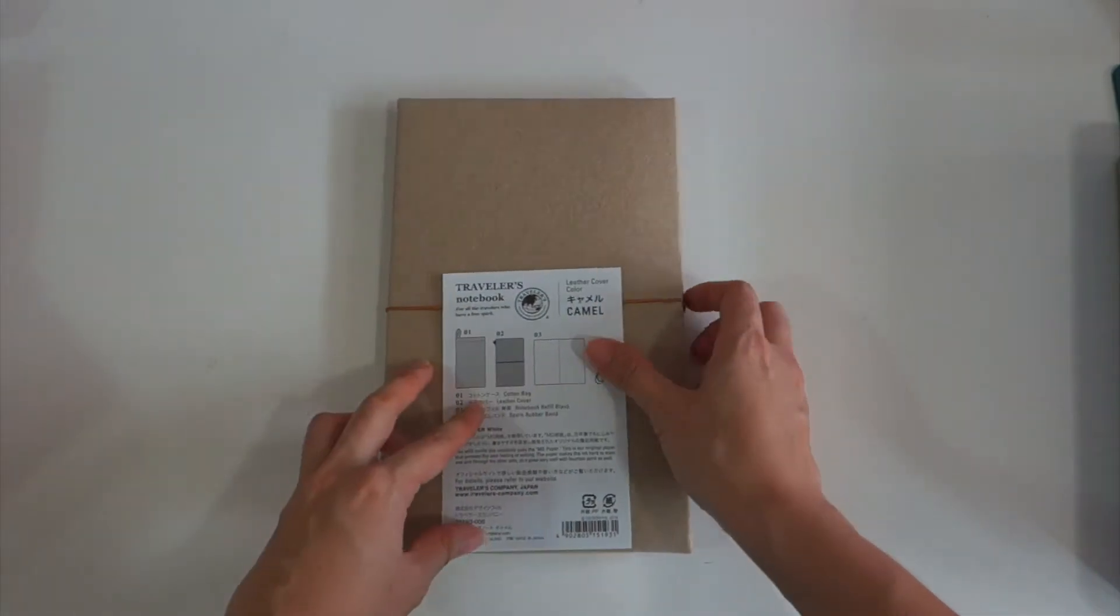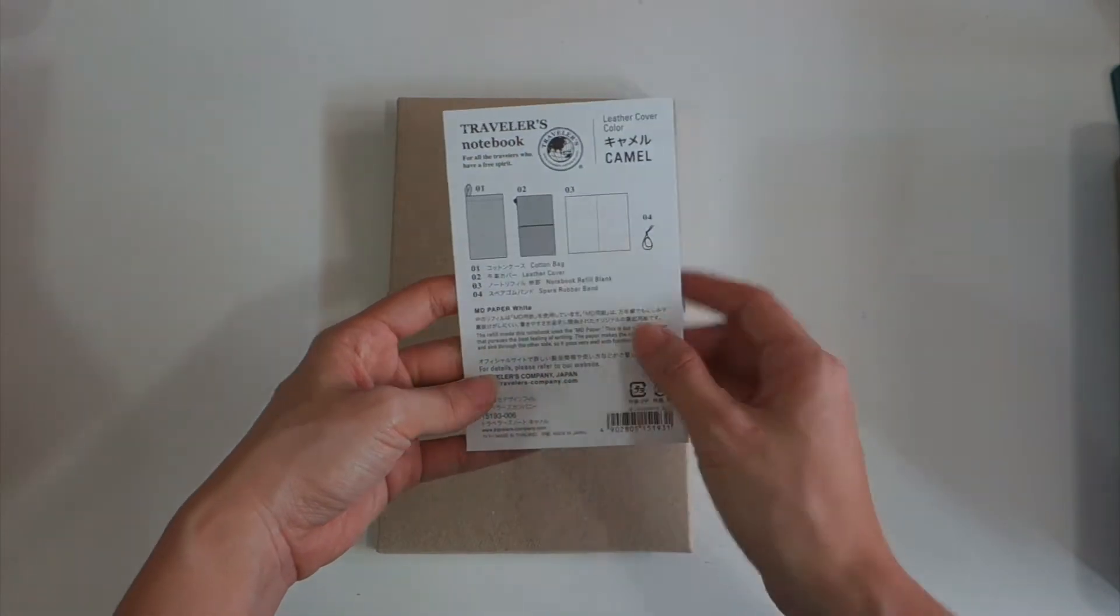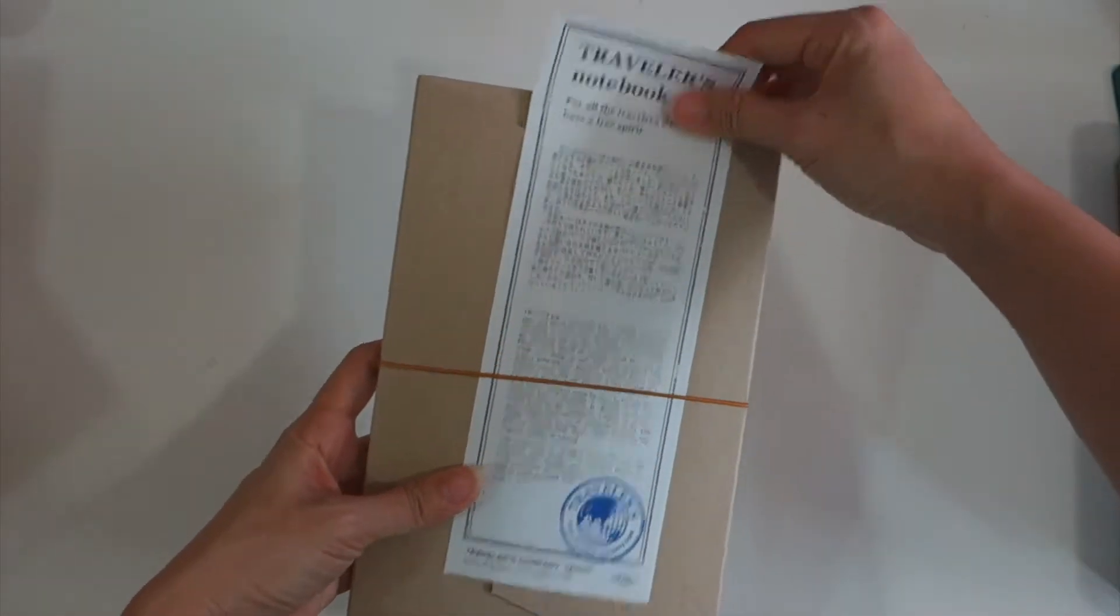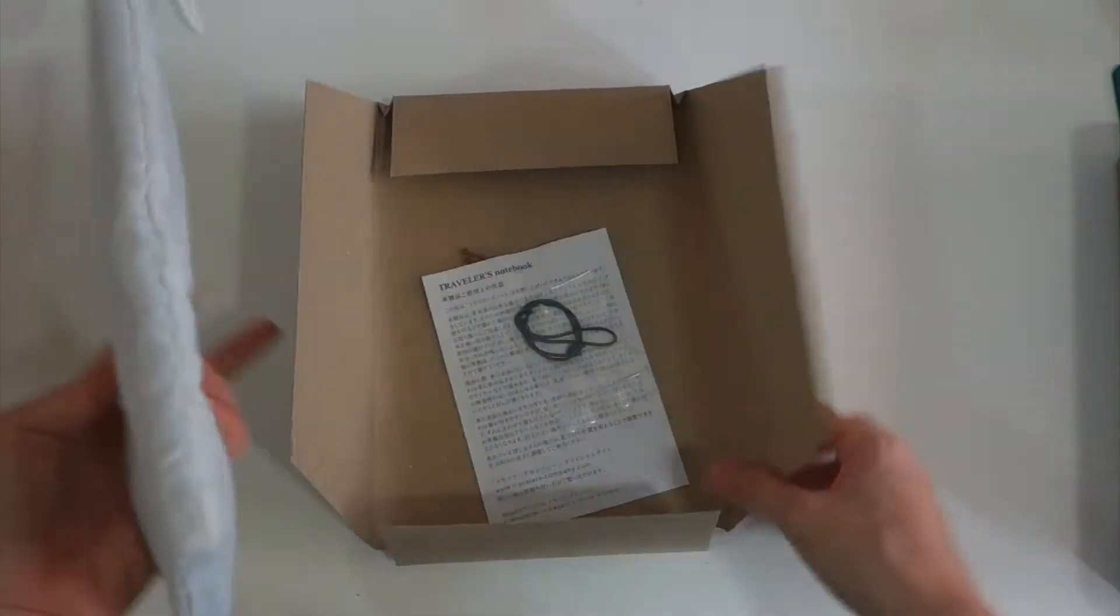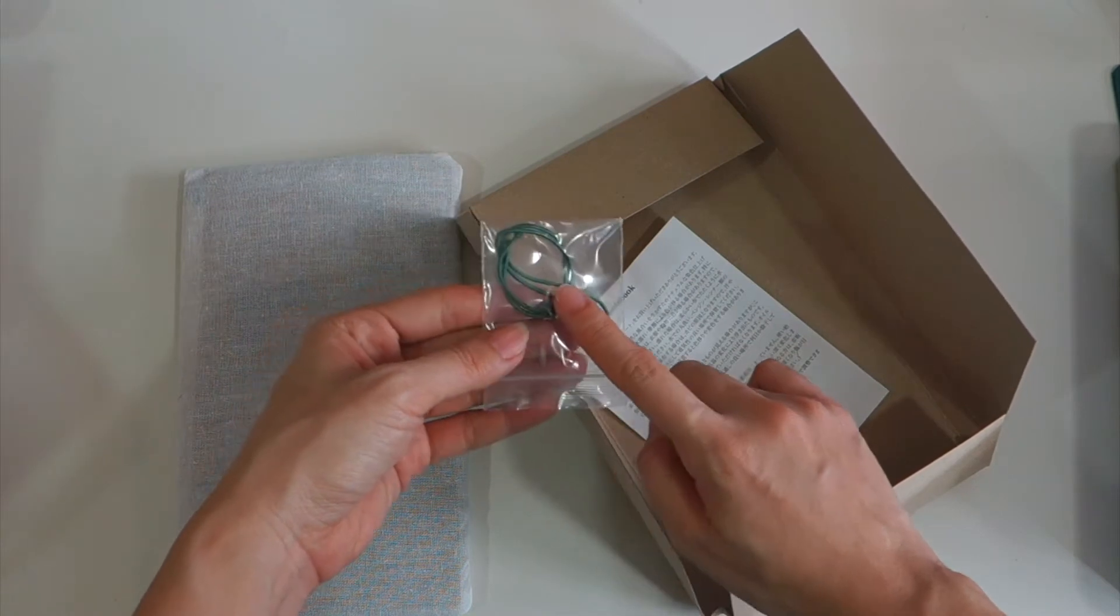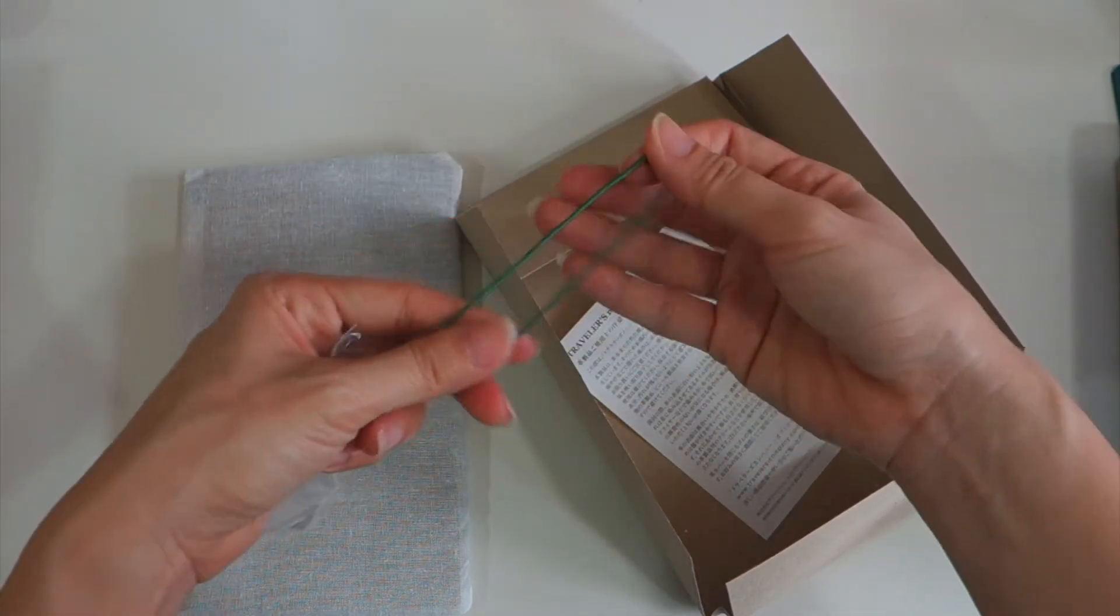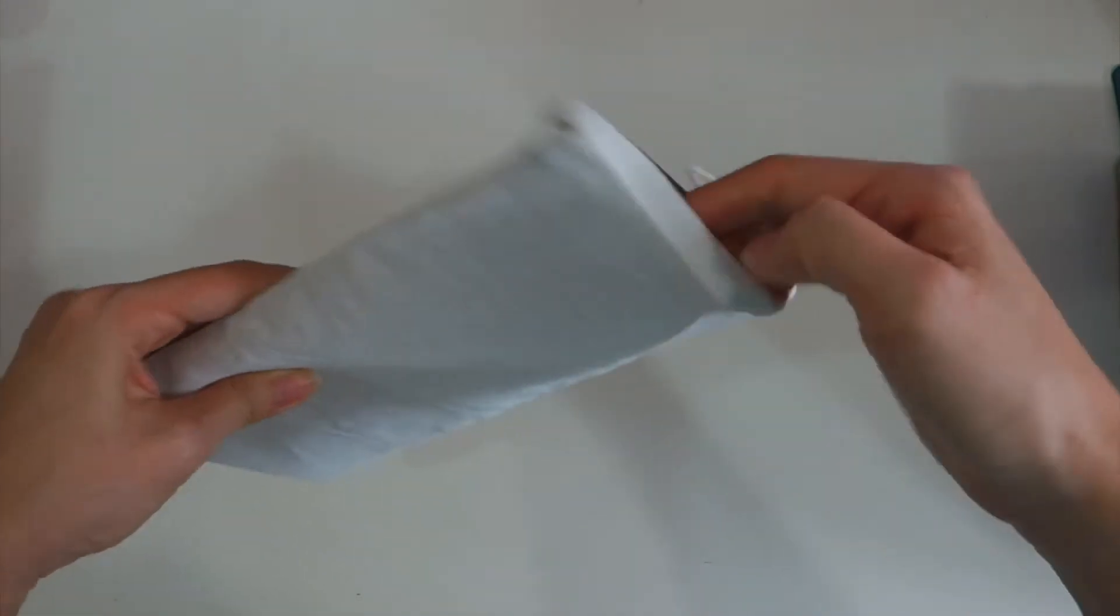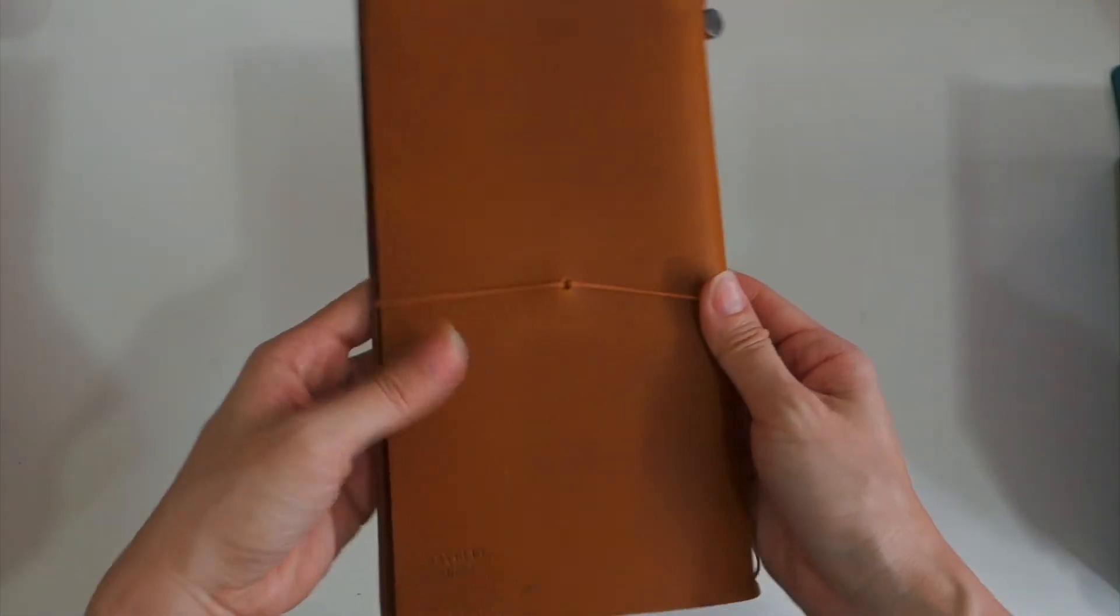As usual you will have paper to tell you what you have inside. You will have a cotton bag, leather cover, a refill, a blank refill, and a spare rubber band. I saw some people use the green colors with the camel color which is very nice. I think I will change to the green color. This is the camel color and it has a little bit scratch here and there but it's okay.